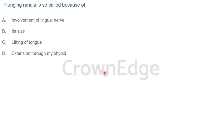Why is it called ranula? It gives the appearance of a frog belly. The scientific name of the frog is Rana tigrina — that's where the name is derived. Now, why is it called 'plunging'? It involves extension through the mylohyoid muscle, which forms the floor of the mouth. Mucus seeps through the mylohyoid and reaches the submandibular region below.